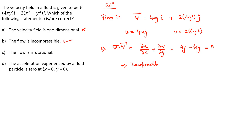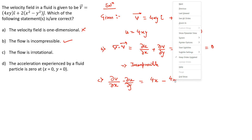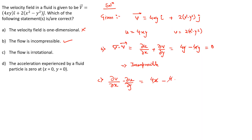Now let's check Option C — whether the flow is irrotational. We check the condition ∂v/∂x - ∂u/∂y. Since v = 2x² - y², ∂v/∂x = 4x. And since u = 4xy, ∂u/∂y = 4x. So ∂v/∂x - ∂u/∂y = 4x - 4x = 0. This means the flow is also irrotational, so Option C is correct.